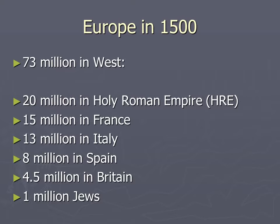By 1500 we see the population rise a little. There were 20 million in the Holy Roman Empire — the old joke is it wasn't Roman, wasn't holy, and wasn't an empire; basically think Germany. There were 15 million in France, 13 million in Italy, 8 million in Spain, and four and a half million in Britain — which includes Wales, England, and Scotland. There were also about a million Jews in Europe, and I want to point that out because in later lectures that matters.